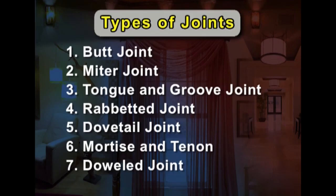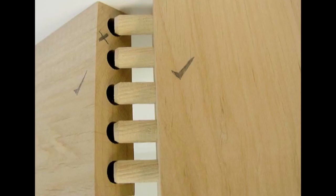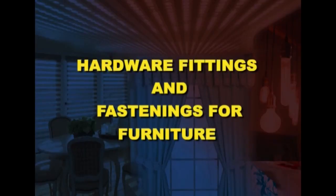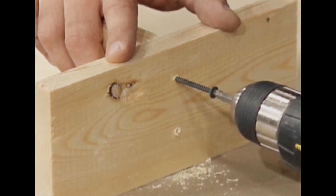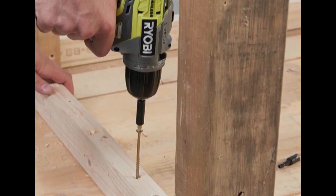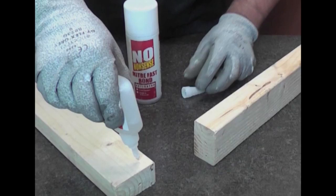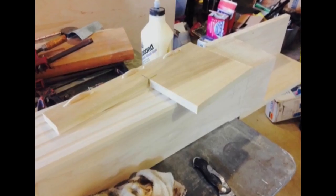The seventh one is the dowel joint. A dowel is a solid cylindrical rod, usually made of wood, plastic or metal. In its original manufactured form, a dowel is called a dowel rod. Hardware fittings and fastenings for furniture: a fitting is a small detachable part on or attached to a piece of furniture or equipment. The method used for joining wood will depend on the function, strength and quality of the product. Wood joints can be made with screws, nails, glues and knock-down components, or with frame joints such as butt joints, halving joints, mortise and tenon, dowel and box joints.